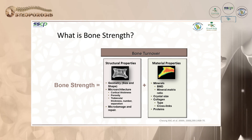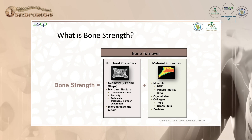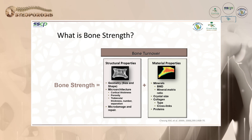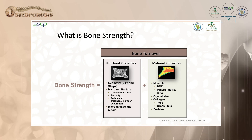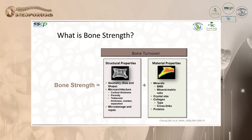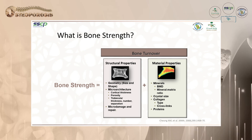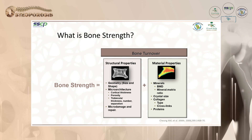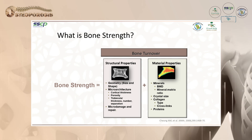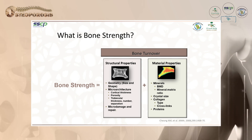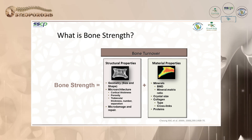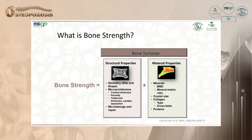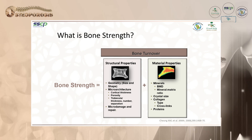When we talk about material properties, we discuss minerals — bone mineral density — the mineral-to-matrix ratio, crystal size, collagen type and cross-linked collagen, and proteins. All these factors contribute to bone turnover and ultimately give us bone strength.